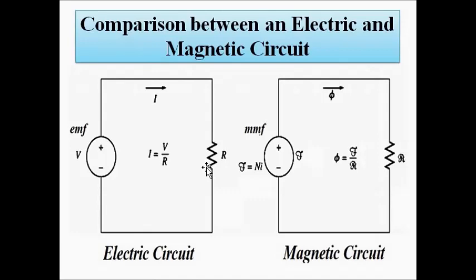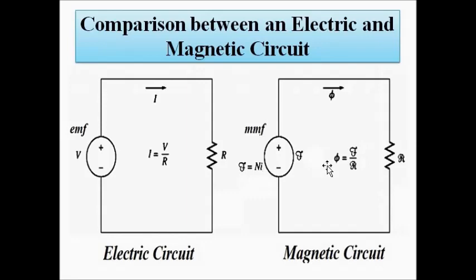In a magnetic circuit, a magnetomotive force (MMF) connected across a reluctance drives a magnetic flux through the magnetic circuit. The correlation can be drawn as: EMF or voltage V is analogous to MMF, current is analogous to magnetic flux, and resistance is analogous to reluctance. So a magnetomotive force drives magnetic flux through a magnetic reluctance in the magnetic circuit.